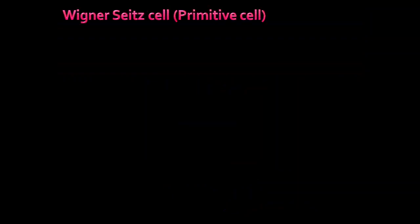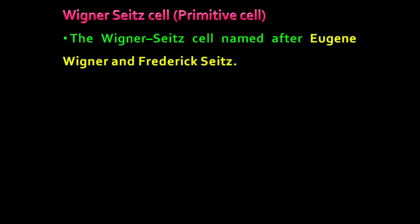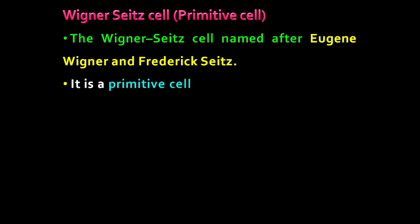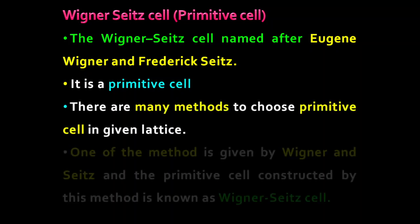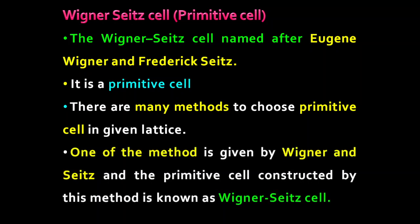The Wigner-Seitz cell is a kind of primitive cell. It is named after two scientists: Eugene Wigner and Frederick Seitz. There are many methods available to construct a primitive cell, and out of these, the method given by Wigner and Seitz produces a primitive cell known as the Wigner-Seitz cell.